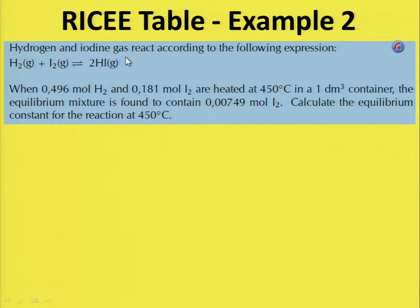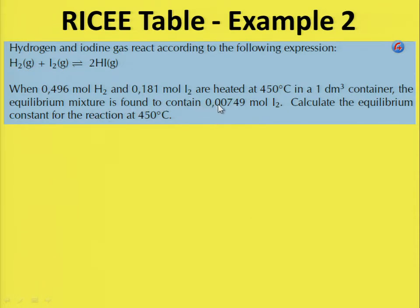Hydrogen and iodine gas react according to the following expression — here is your chemical reaction. When 0.496 moles of hydrogen and 0.181 moles of iodine are heated at 450 degrees Celsius in a one cubic decimetre container, the equilibrium mixture is found to contain 0.00749 moles of iodine.